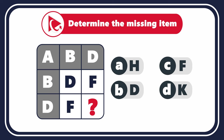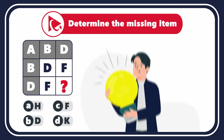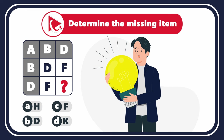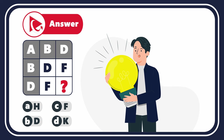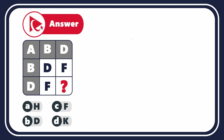Take a close look to see if you can come up with the answer. This question is a little tricky, so here's a hint: consider why some boxes in the matrix are gray and some are white.